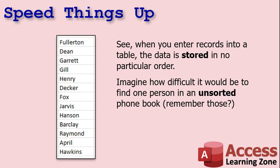When you enter records into a table, the data is stored in no particular order. So if you want to sort this list, it's slow. If you want to search for a single name, Access has to start at the top and run through all the records one at a time until it finds what you're looking for. Imagine how difficult it would be to find one person in an unsorted phone book — those big thick books the phone company used to drop off at your house. Imagine trying to find a person in an unsorted phone book. That's basically what indexing solves.